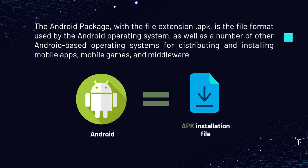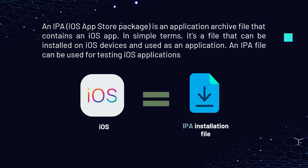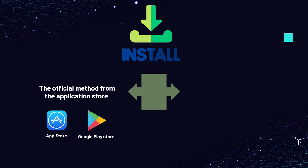iOS devices use IPA files for installation. An IPA is an application archive file that contains an iOS app. In simple terms, it's a file that can be installed on iOS devices and used as an application. An IPA file can be used for testing iOS applications.